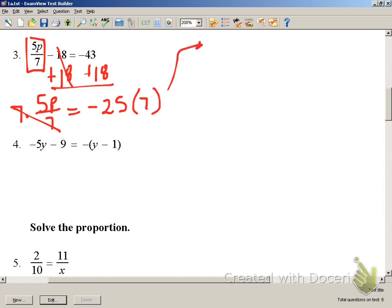So I am left with 5P equals a negative 25 times 7, which is a negative 175. Solving for P by dividing by 5, P equals a negative 35.